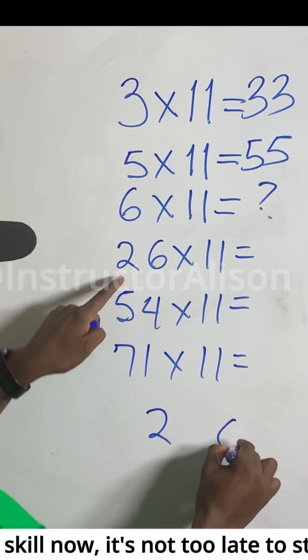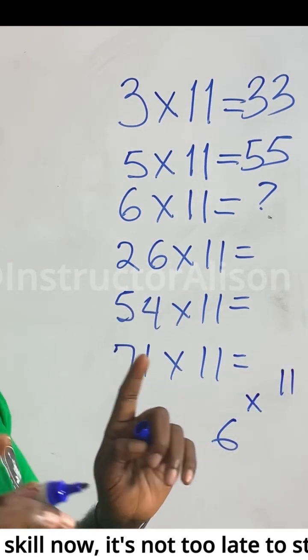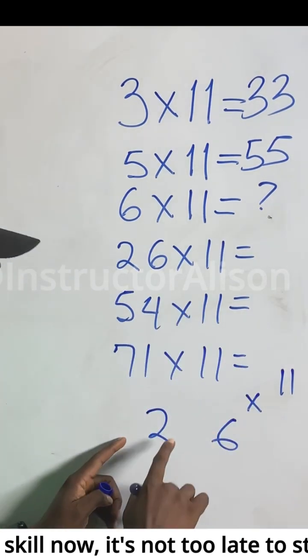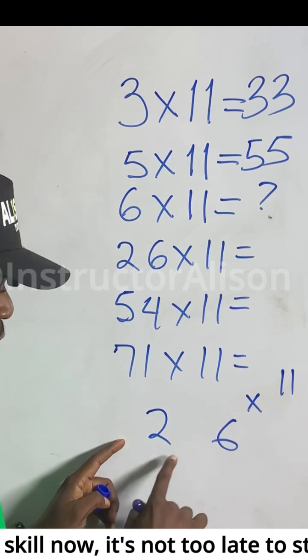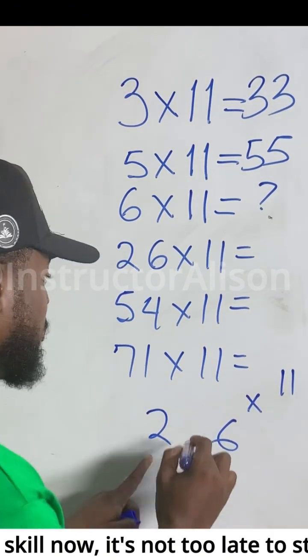Write 6 times 11. This can be the secret now. It's very, very simple. Just tell yourself, if 26, they multiply 11, it will be 2 plus 6. 2 plus 6 will give you 8. Put 8 here.